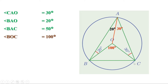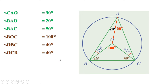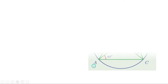Triangle BOC is another isosceles triangle with OB and OC equal, so its two base angles are equal. Since angle BOC is 100 degrees, the sum of the other two angles is 80 degrees, and since they are equal, each is 40 degrees. The angles of triangle OBC are 100, 40, and 40 degrees. The angles of triangle ABC are 50, 60, and 70 degrees.